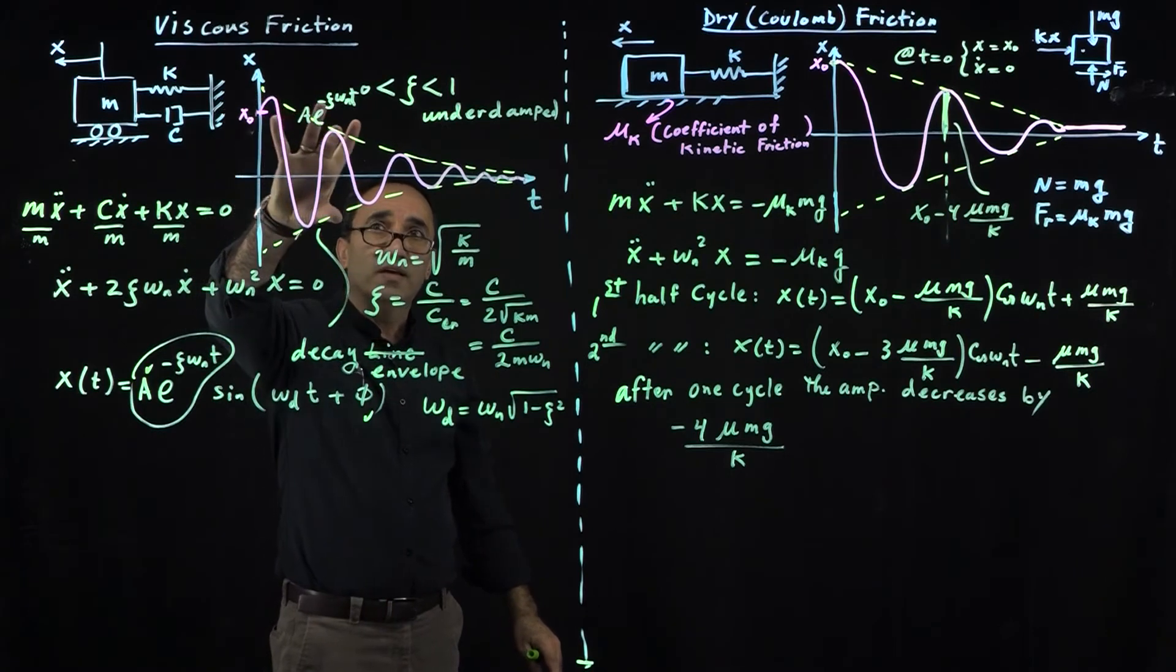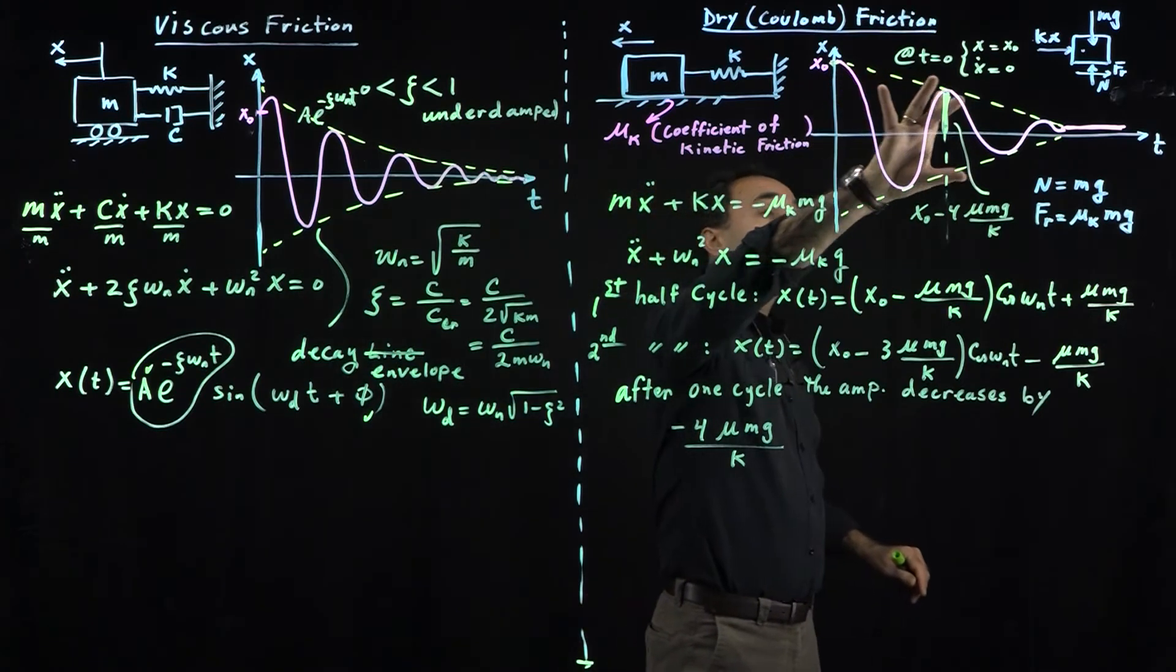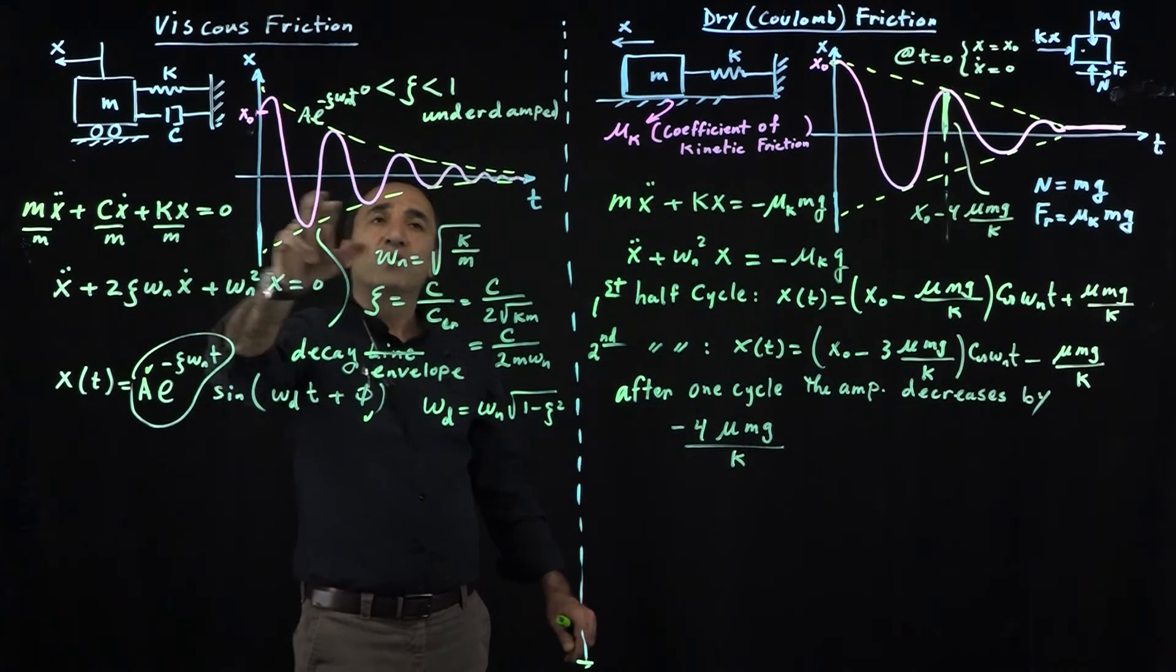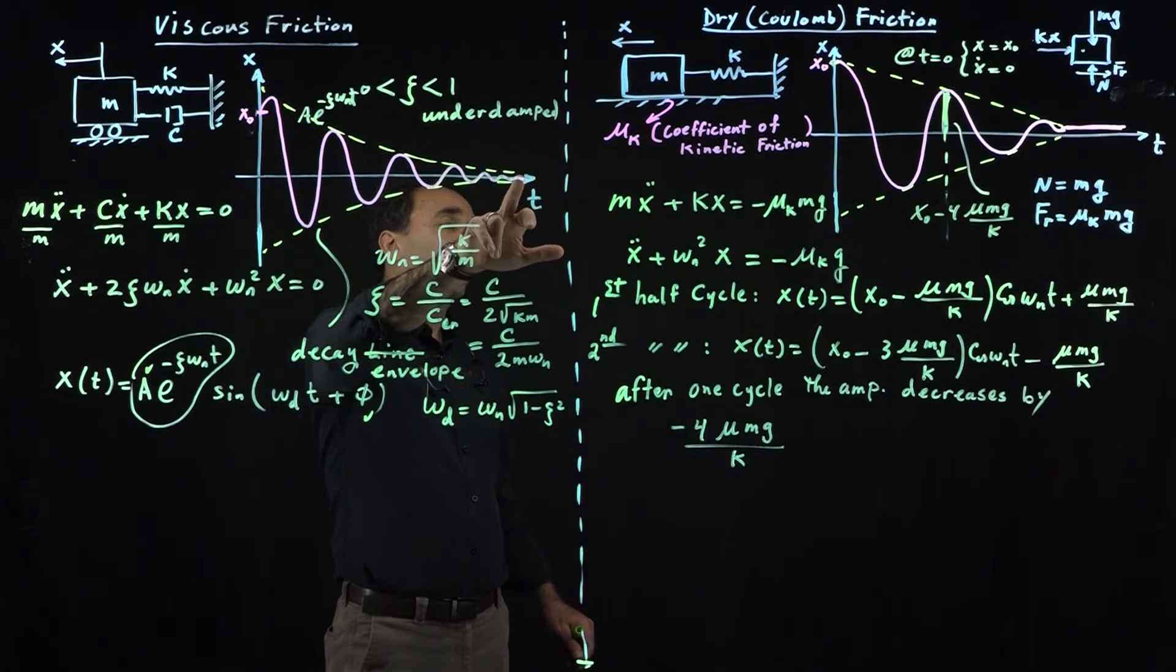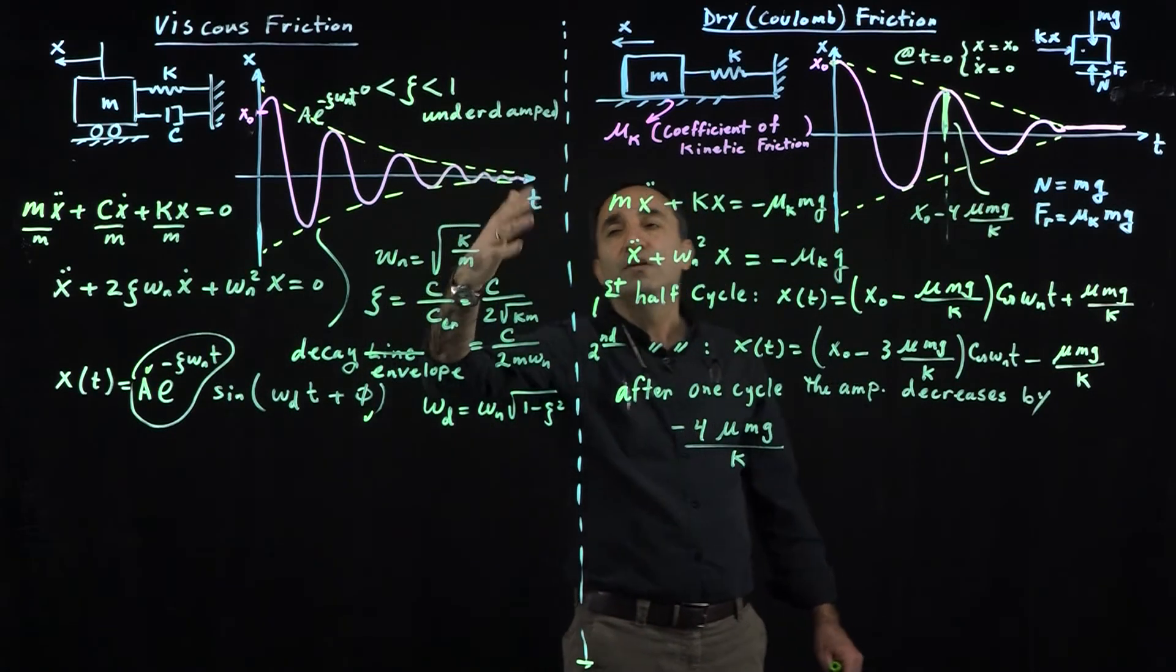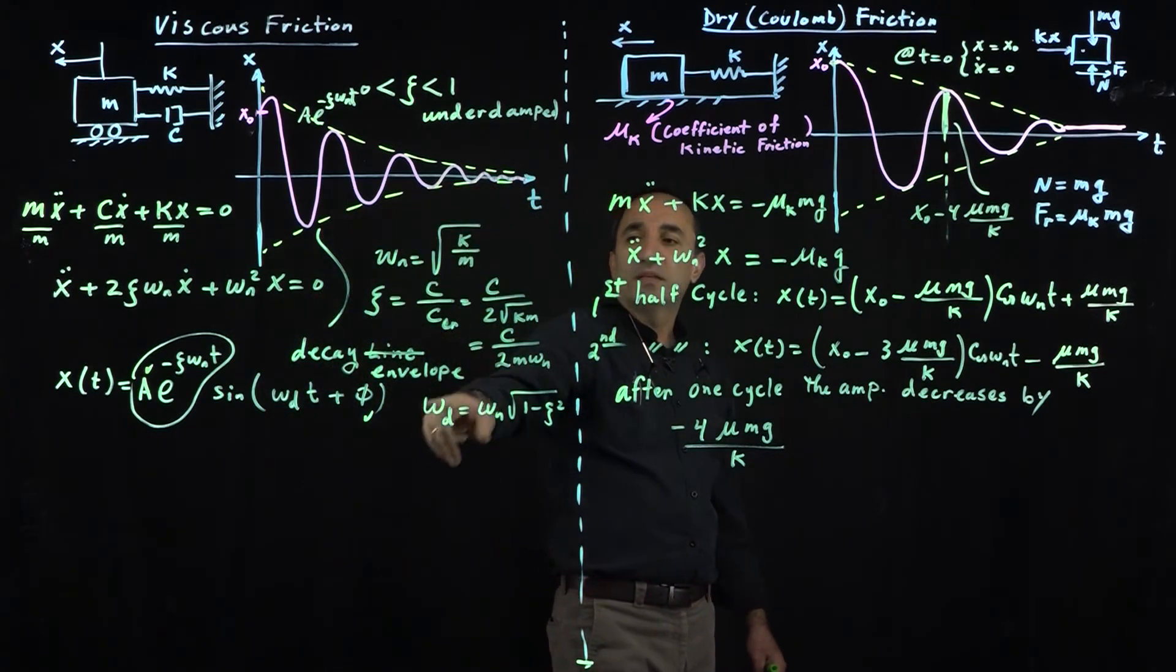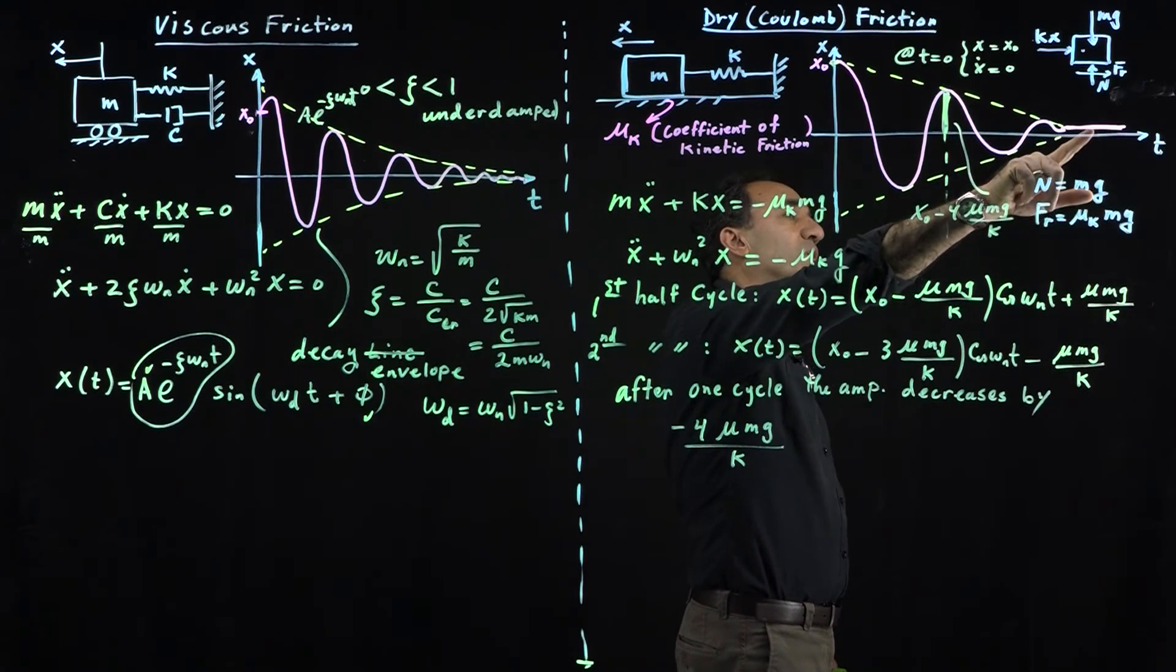Let's make some comparison between these two systems. Here you have an exponential envelope, but for dry friction, you don't see an exponential envelope. You see an envelope that is linear. Theoretically, this would never come to zero or whatever value it settles on. The system never stops; it will theoretically vibrate forever. But this guy will come to rest at some point, at some time.